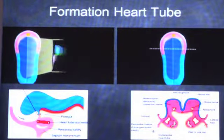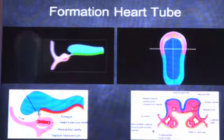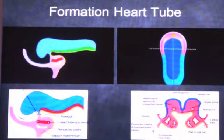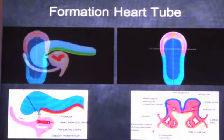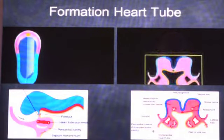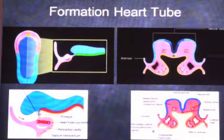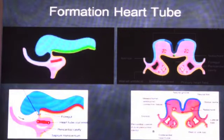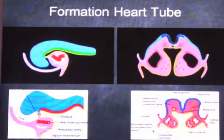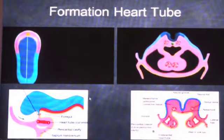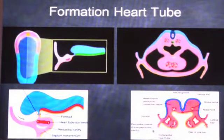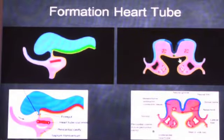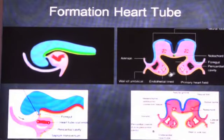The next thing to happen is the folding of the embryo. As the cranial end grows and expands, the heart is invaginated dorsally and moves backwards. In the cross-sectional view, the heart tubes come from the lateral ends and get invaginated. This is known as the fusion of the two heart tubes from the lateral side, forming a single heart tube at this point.